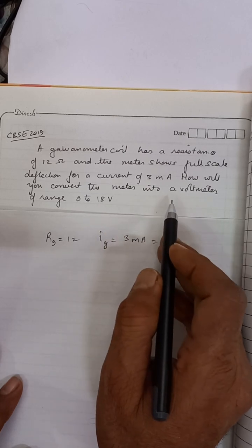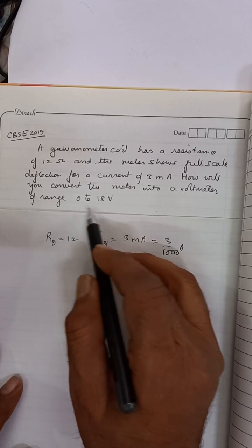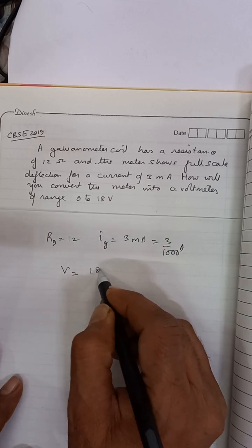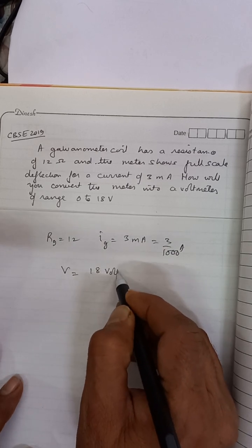How will you convert the meter into a voltmeter of range 0 to 18 volts? So we need to convert this into an 18 volts voltmeter.